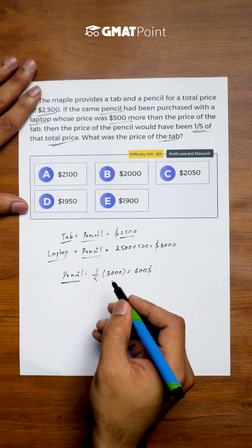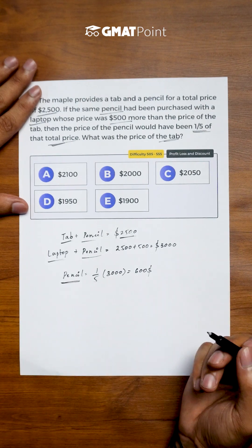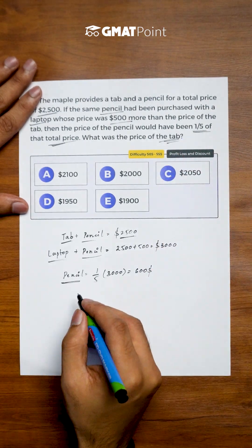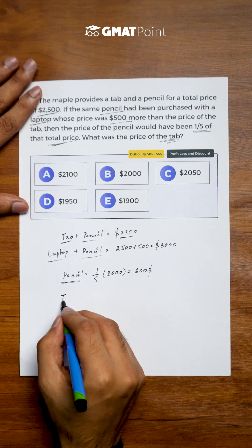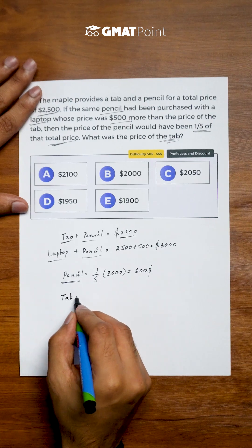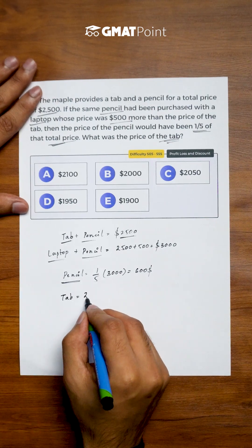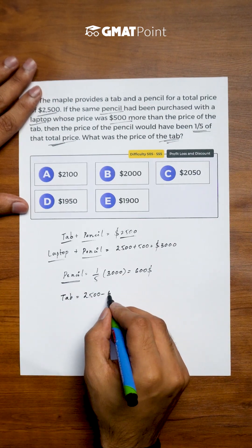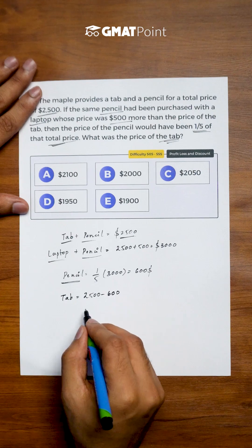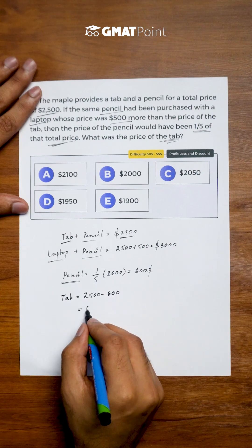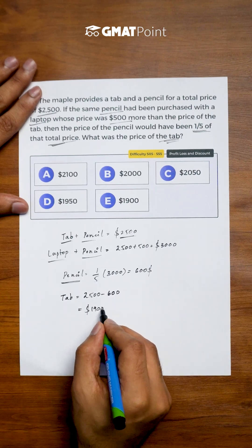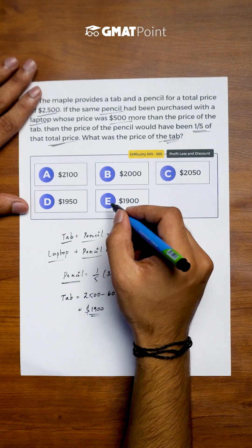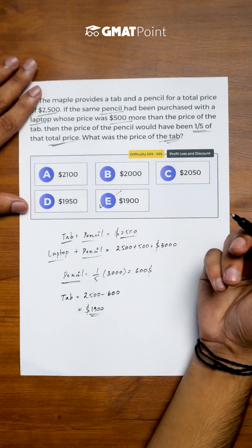The price of the pencil is 600 dollars and the question asks for the price of the tab. The price of the tab equals 2500 minus the price of the pencil, which is 600 dollars. So the price of the tab is 1900 dollars and the correct answer is option B.